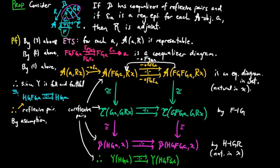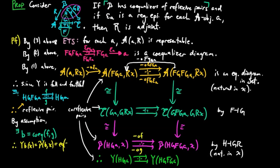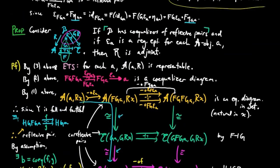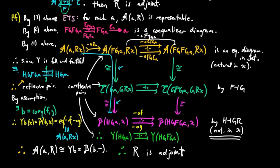Then by the assumption that the category b has co-equalizers of reflexive pairs, there exists an object b in the category b which is a co-equalizer of the blue parallel pair. Therefore since the Yoneda embedding preserves limits, we have y(b)(x), which by definition is the hom set b(b, x), equal to the equalizer of the purple pair on the right. And since the hom set a(a, r(x)) is the equalizer of the top pair, it is also the equalizer of the purple pair since limits are defined up to isomorphism. Therefore the presheaf a(a, r-) is isomorphic to the representable presheaf on the object b, which is what we wanted to show. Therefore r is an adjoint, which completes the proof.